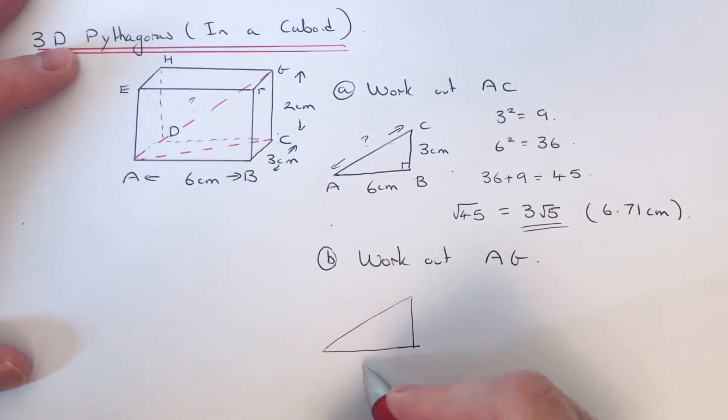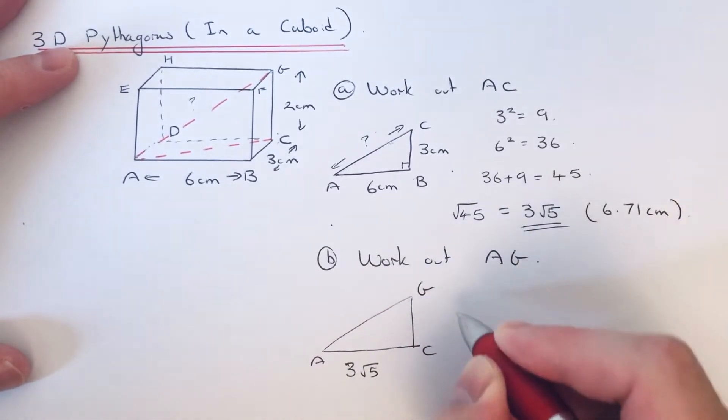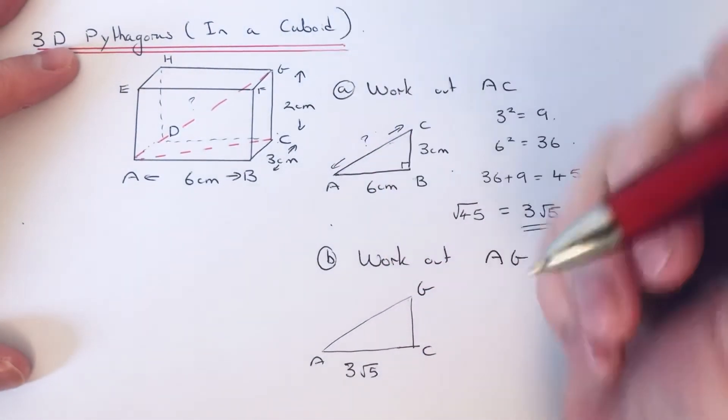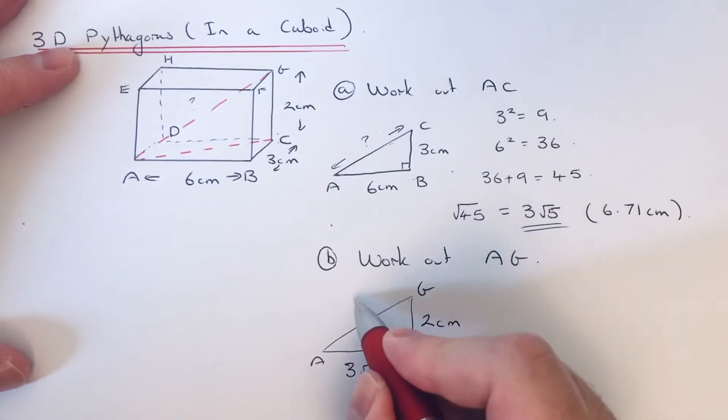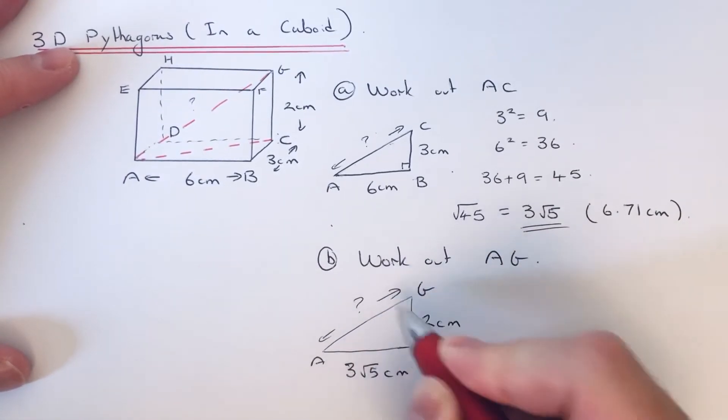So we've got A to C which is 3√5, and we've got C to G which is 2, and we're after A to G, so that's the one we're after.